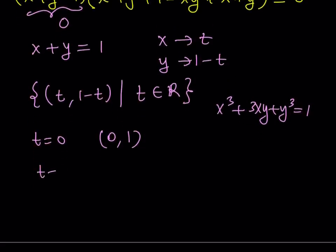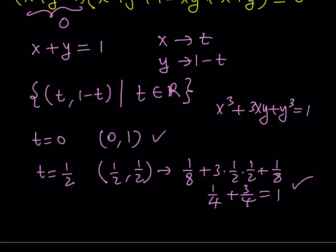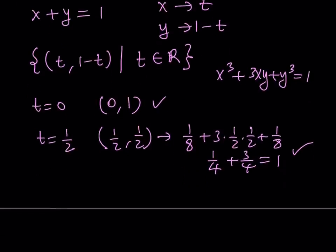If t equals one half, you get (1/2, 1/2). This is interesting because x and y are equal — you could find this by replacing y with x in the original problem, but that would just be a particular solution. When you verify: one eighth plus 3 times one half times one half plus one eighth equals one fourth plus three fourths equals 1. And no matter which real values you use, this is going to be satisfied.